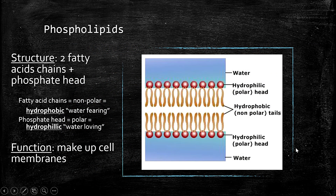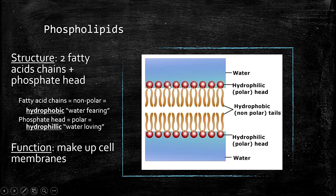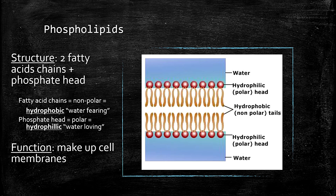Let's now go to the next form of lipid. We have phospholipids, which we discussed during our lesson on the plasma membrane. The phospholipid is composed of two parts: the fatty acid chain and the phosphate head. Similar to fatty acids, it has a polar head and a non-polar tail. Phospholipids are typically found in the structures of living things, most commonly in the plasma membrane of cells.